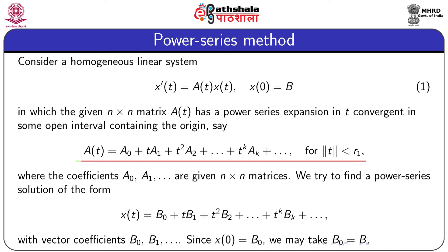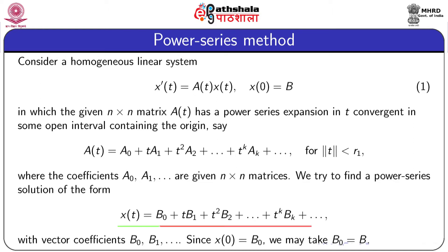For example, A(t) may have the form A₀ + t·A₁ + t²·A₂ + ... + t^k·A_k + ... for |t| < r₁, where the coefficients A₀, A₁, ... are given n×n matrices. We try to find a power series solution of the form x(t) = b₀ + t·b₁ + t²·b₂ + ... + t^k·b_k + ... with vector coefficients b₀, b₁, ....